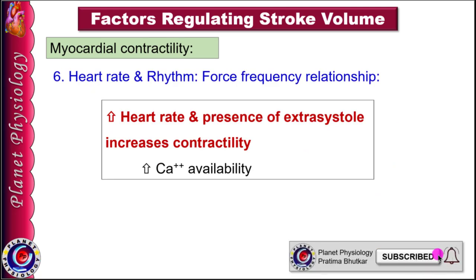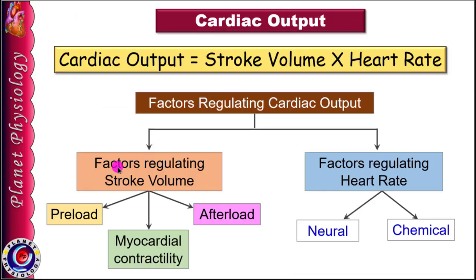The last factor affecting myocardial contractility is heart rate and rhythm. Within physiological limits, increase in heart rate increases force of contraction according to the force-frequency relationship. Presence of extra systoles is also associated with increased force of contraction. These effects are relatively small and are due to accumulation of calcium in the muscle fibres.